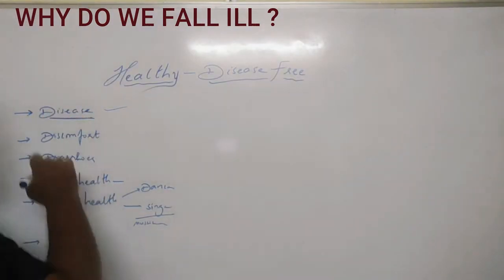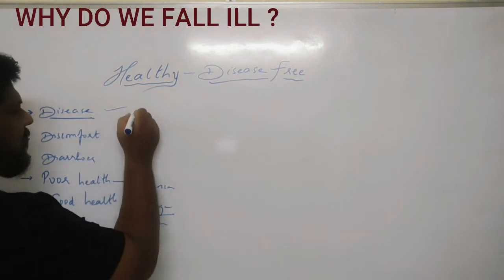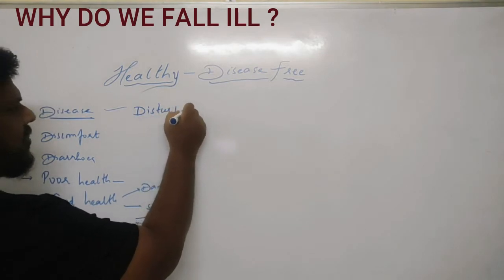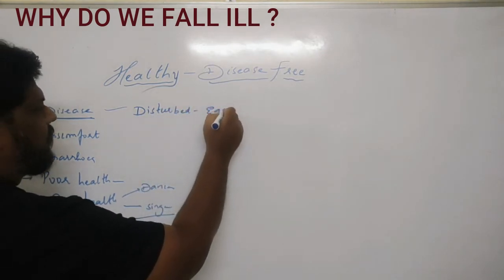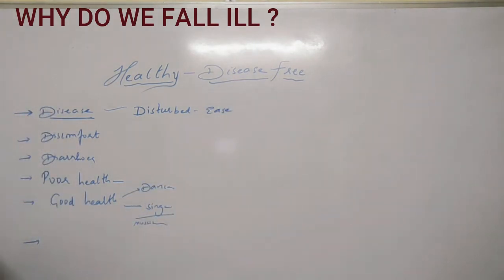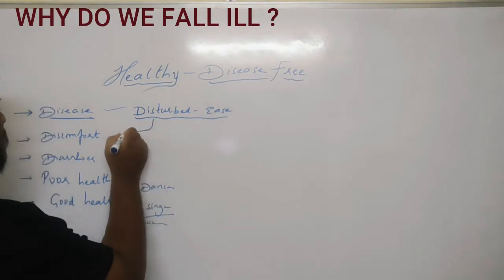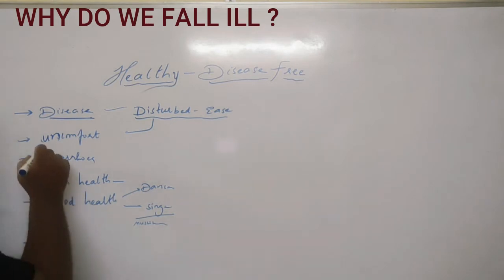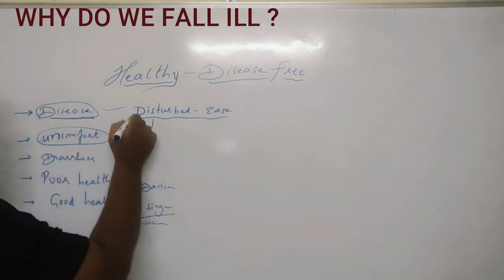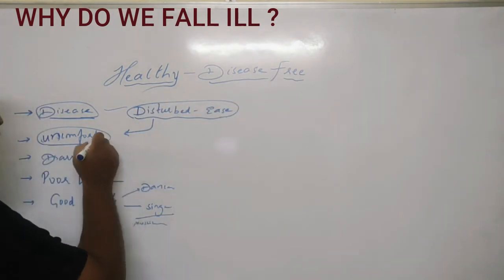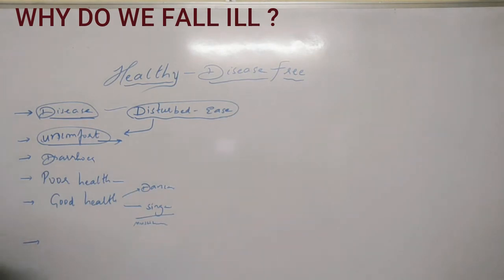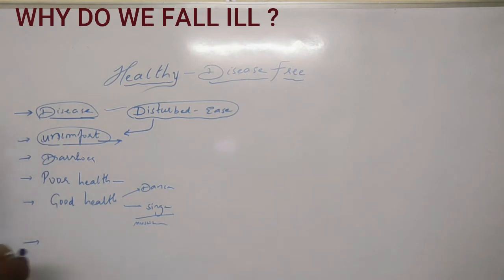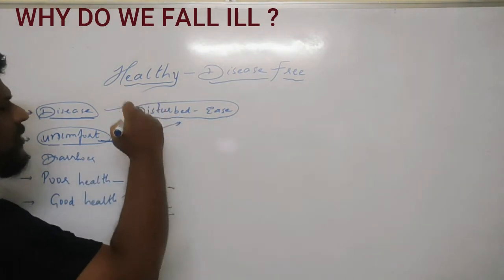When you talk about the word 'disease,' it means there is some kind of disturbance in your body. The word 'disease' can actually be written as 'dis-ease' — meaning disturbed ease, or uncomfortable. So a person who is suffering from disease is in an uncomfortable zone, not in a comfort zone.